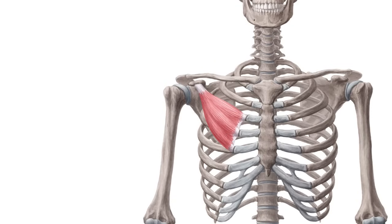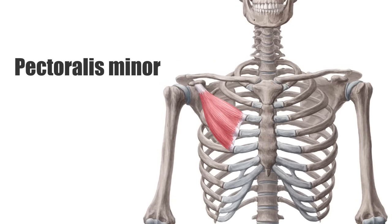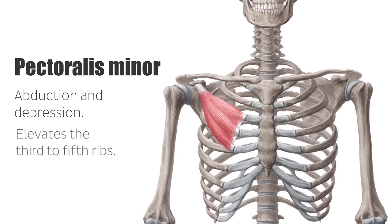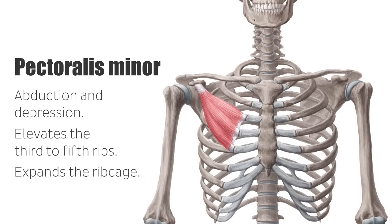The pectoralis minor has two main functions. On one hand, it pulls the scapula anteriorly and inferiorly toward the ribs, known as abduction and depression, respectively. This leads to a dorsomedial movement of the inferior angle of the scapula, which is helpful when retracting the elevated arm as well as moving the arm posteriorly behind the back. On the other hand, the pectoralis minor elevates the third to fifth ribs given a fixed scapula, and expands the ribcage, and can also serve as an accessory muscle during inspiration.